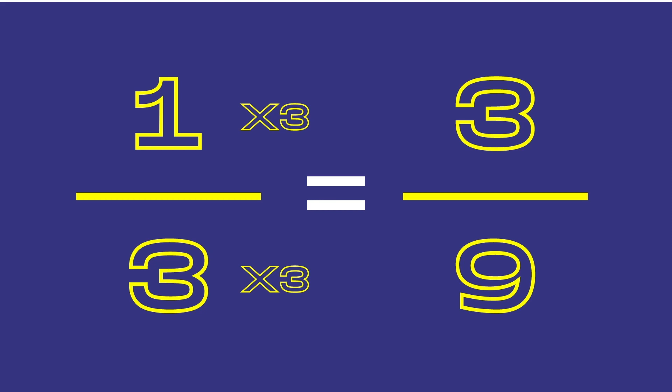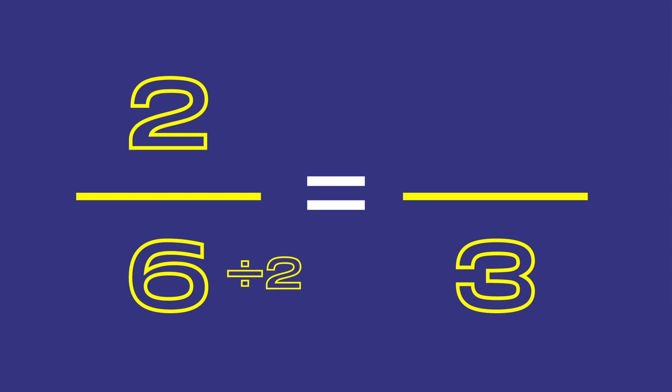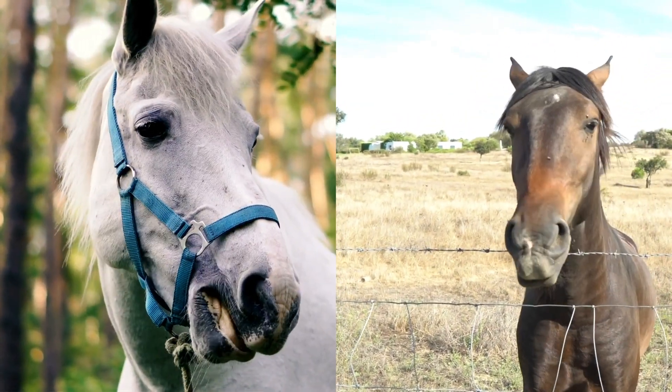We can also divide the numerator and denominator by the same number. In this case, we can divide 6 by 2, that will give us 3 for a denominator. And then the numerator, we can also divide by 2. 2 divided by 2 is 1. 2 sixths and 1 third are equivalent fractions. I eagerly await the first question.